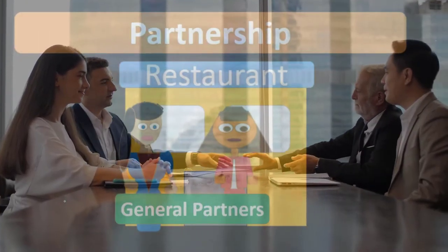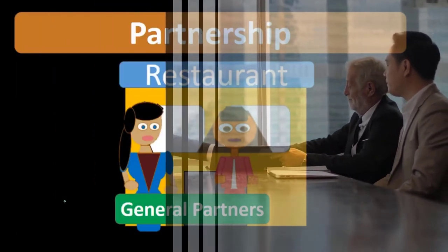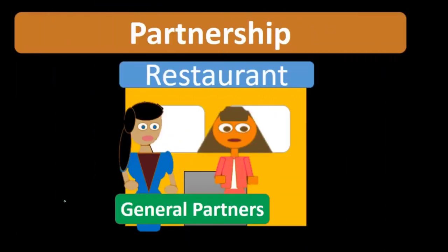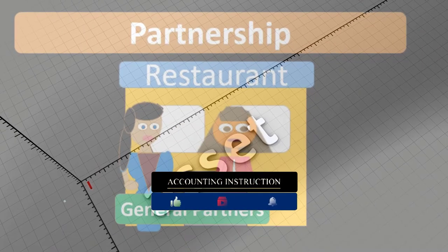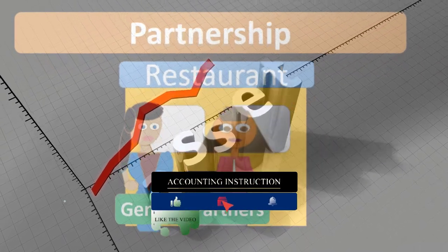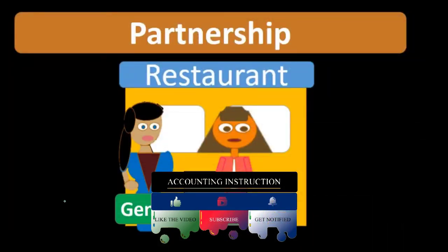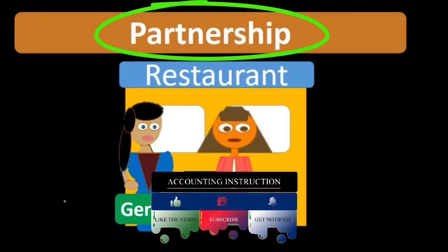As a general partnership, they would have co-agency, meaning both partners can make decisions and sign contracts as an agent of the business. They are also subject to liability for both the assets put into the partnership as well as personal assets.